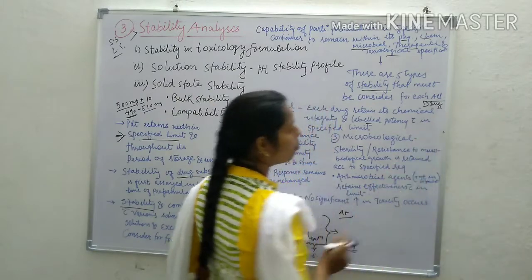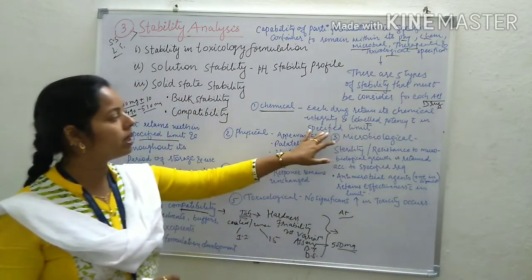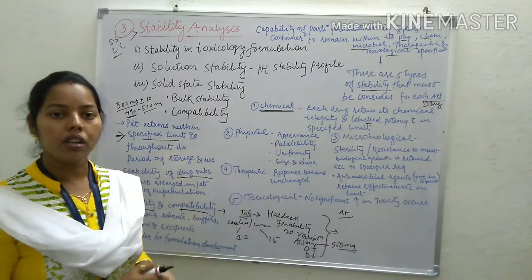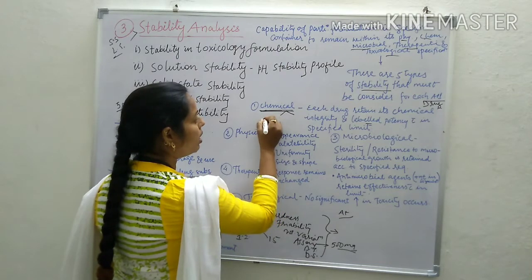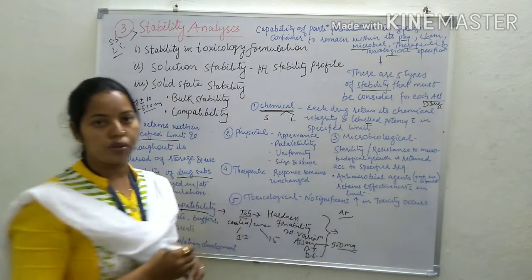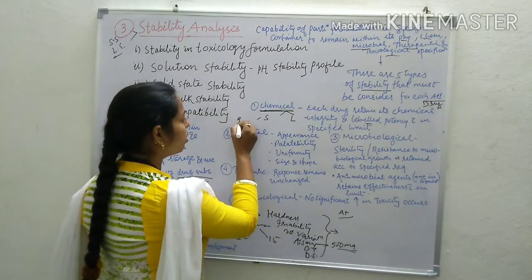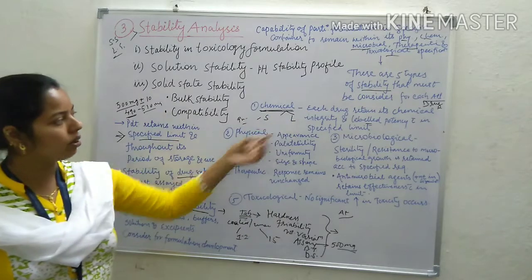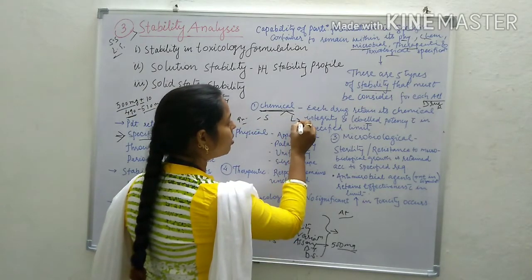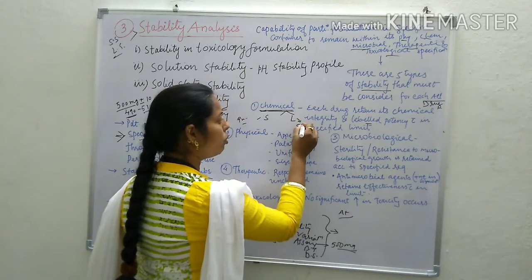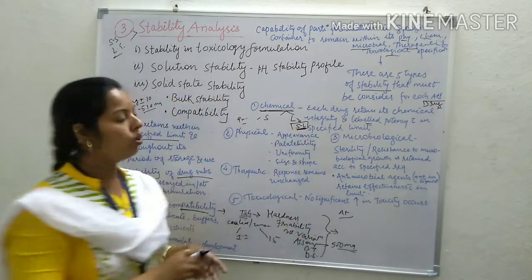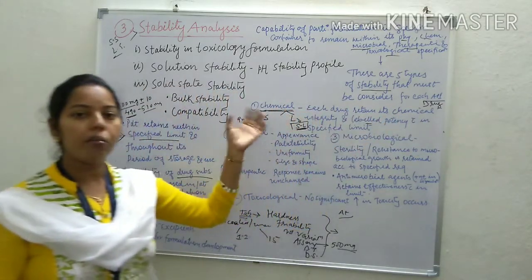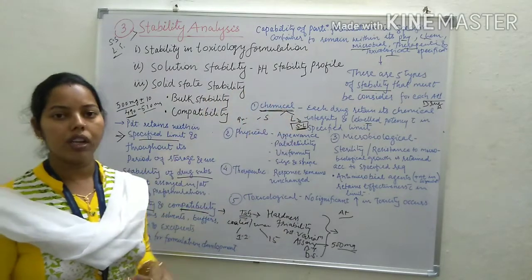In chemical stability, we are talking about the drug or API, and the labelled potency must be within specified limits. We can find out chemical stability for solid dosage forms and for liquid dosage forms. For solid dosage forms, we perform quantitative analysis of the materials. In liquid formulations, we study the components of the liquid formulation, including any solids present, and ensure chemical integrity is maintained during preparation of your API.